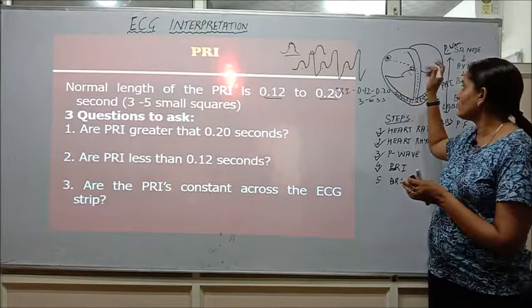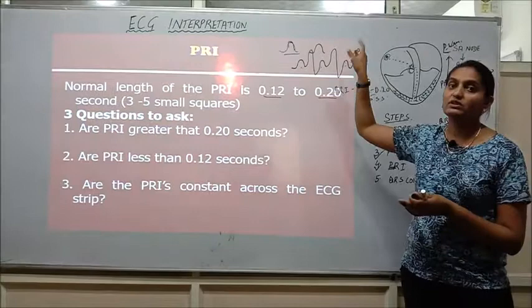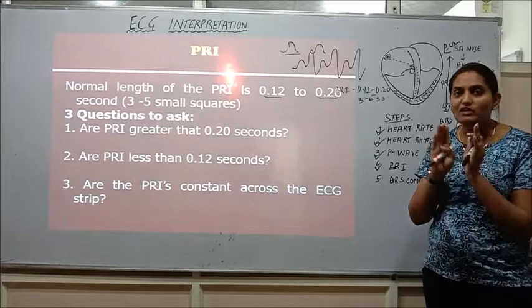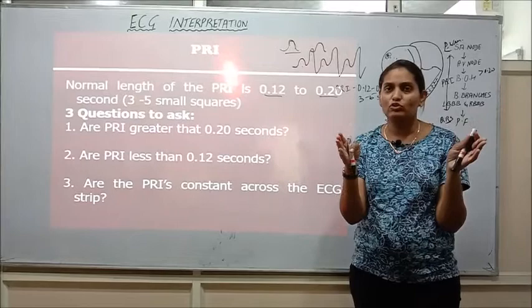But if AV node is blocking the electrical impulses for a longer time, then there will be delay in PR interval or the time period between the atrial contraction and the ventricular contraction. So this is the type of heart block condition in which the PR intervals will be coming out to be more. And again I would say that in case of dysrhythmias we will be discussing this in detail. But for this time being, you have to remember the PR intervals are always greater in cases of heart blocks.